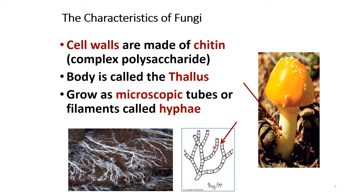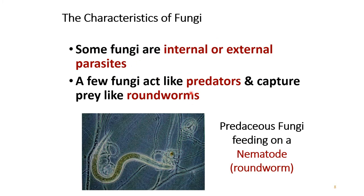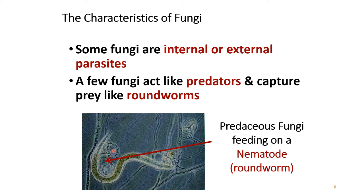The thallus grows as microscopic tubes or filaments called hyphae. Some fungi are internal parasites and some are external parasites. A few fungi act like predators and capture prey like roundworms — this is the roundworm, and this is the fungal mycelium which acts like a predator.